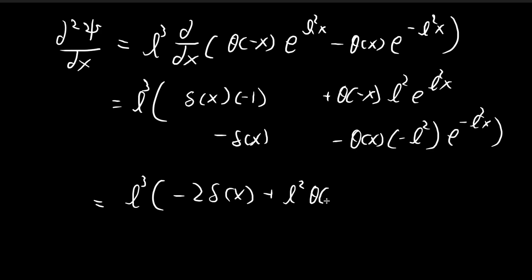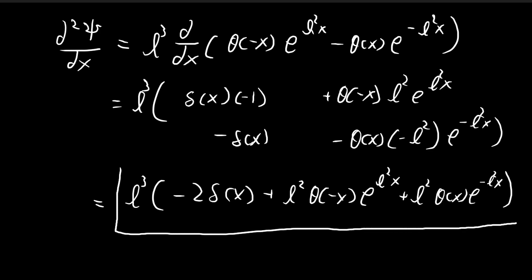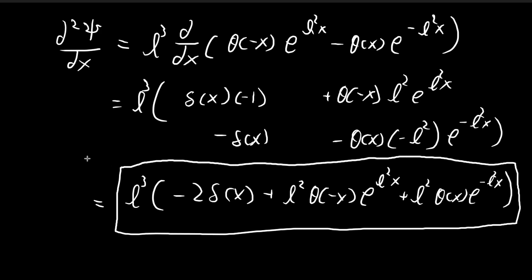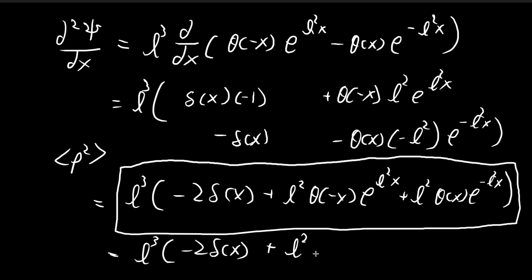So the second derivative contains −2l²δ(x), plus l²[θ(−x)e^(l²x) + θ(x)e^(−l²x)]. Now that we've captured the delta function behavior at x = 0 from the step functions, the step function has outlived its usefulness. We can replace θ(−x)e^(l²x) + θ(x)e^(−l²x) back with e^(−l²|x|), restoring the absolute value notation.